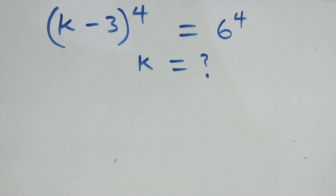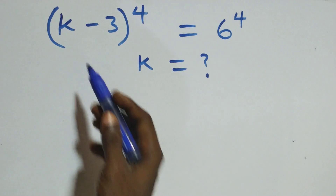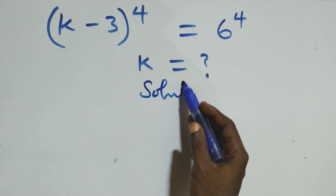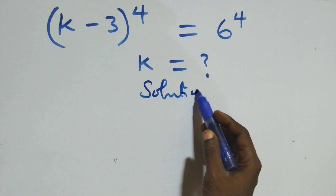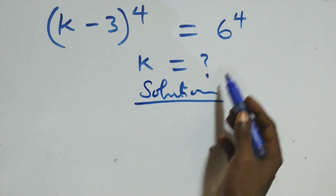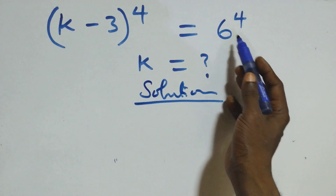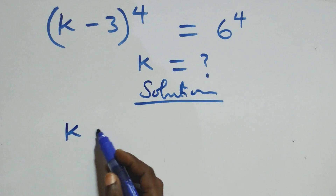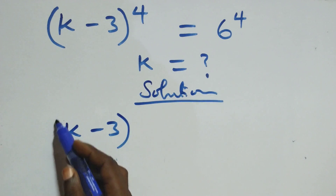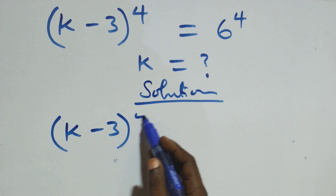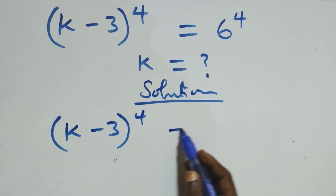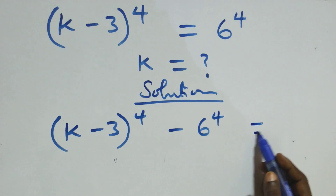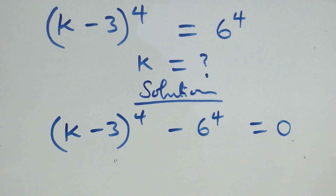Hello, you are welcome. Here we solve this exponential equation. We take 6 raised to the power 4 to the left-hand side, giving us k minus 3 raised to the power 4 minus 6 raised to the power 4 equals 0.